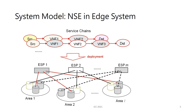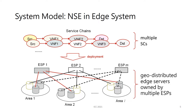The system model covers NSE in Edge Systems. We have multiple service chains to be deployed into Edge Systems. We have multiple Edge Service Providers, or ESPs. Each ESP has multiple Edge Servers, one for each area. The owner of the service chain will pay the ESP for the deployment of service chains.